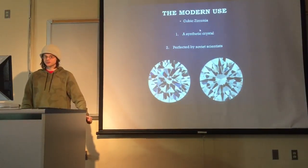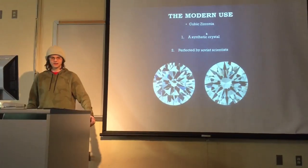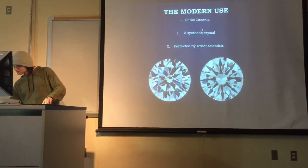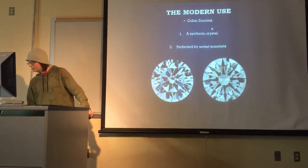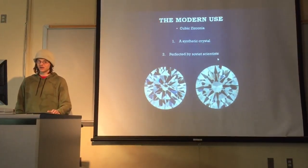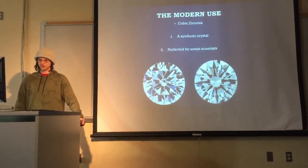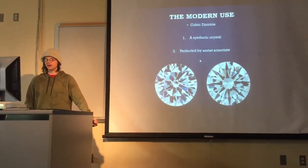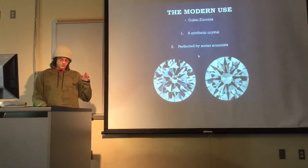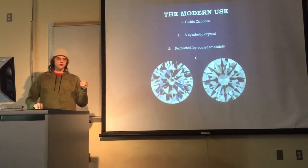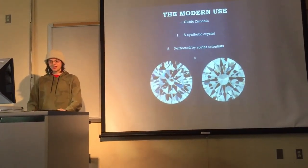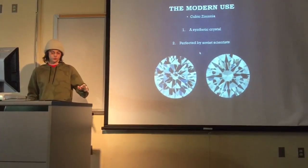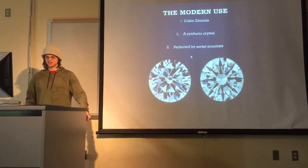Moving on to modern use, we can't talk about the modern diamond without mentioning its ugly cousin, cubic zirconia, which is a synthetic crystal made out of the mineral zirconia. It is almost impossible to tell the difference between the two — this one is cubic zirconia and this one is diamond, just a top-down look at a polished piece. Cubic zirconia was first developed in the 1960s, but the craft wasn't perfected until the 70s, when Soviet scientists perfected and published the process. It then took the jewelry market by storm, because by weight and look they're almost indistinguishable.